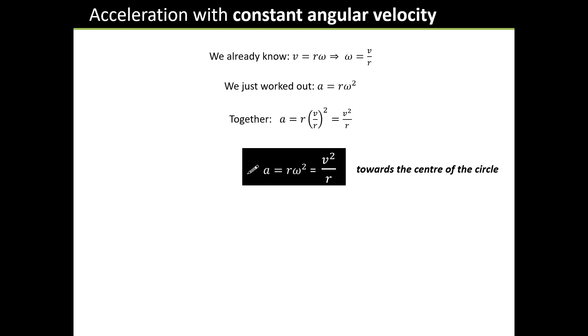The acceleration of a particle moving around a circle at a steady speed is rω² towards the center. So let's sum up where we've got to. We know that v, the tangential velocity, is rω. That means ω is v/r. We've just worked out that acceleration is rω². Now, I can combine these two formulae to get this. I've just worked out another formula for the radial acceleration of a particle moving in a circle. The acceleration is rω² or v²/r towards the center of the circle.